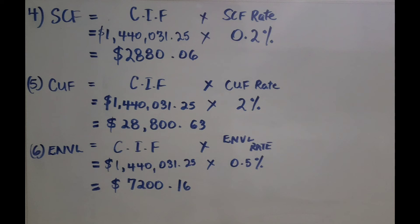For the CUF or the customs user fee, it is the cost insurance and freight multiplied by the CUF rate. The CUF rate can be found in the question. When you do that, the answer should be $28,863.